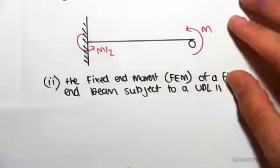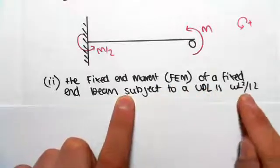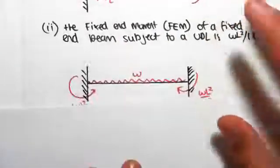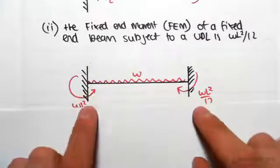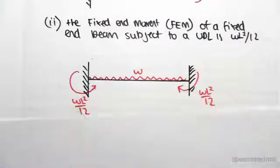The second piece of theory is the fixed end moment (FEM) of a fixed end beam subject to a UDL is wL²/12. So if we have a UDL w, the fixed end moments we're going to be getting at either ends will be wL²/12. We're going to be using those two pieces of theory to do the moment distribution.